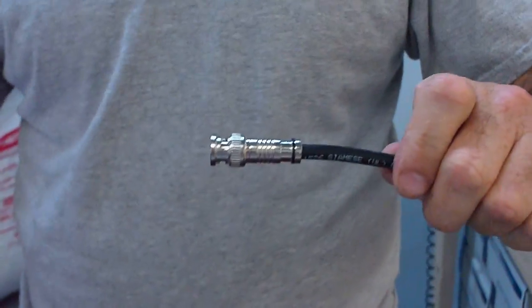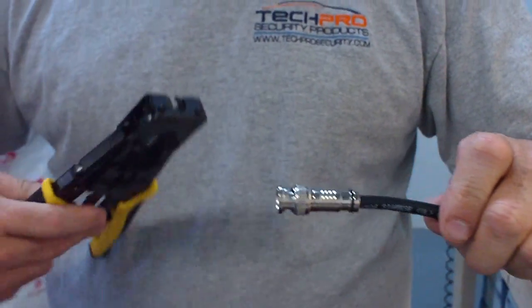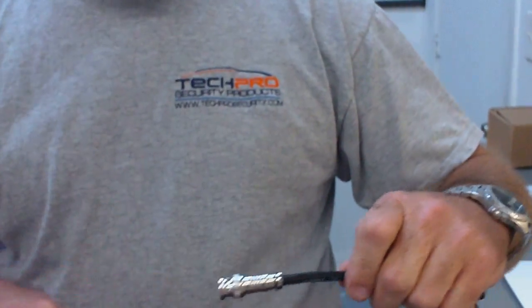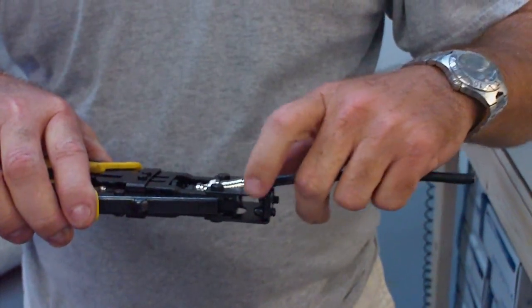And then you'll use a tool, which we sell on our website as well, and this tool is used to connect the BNC connector compression fitting to RG59 cable.